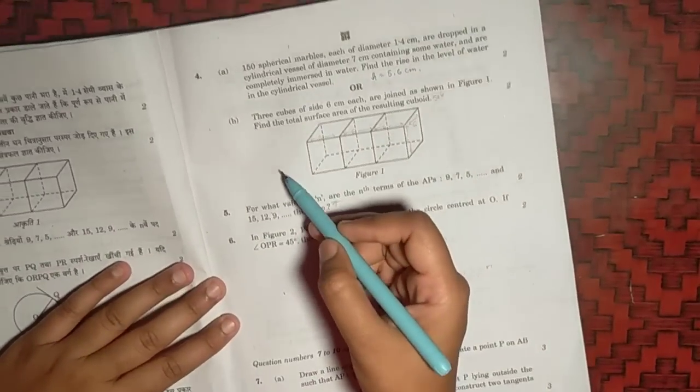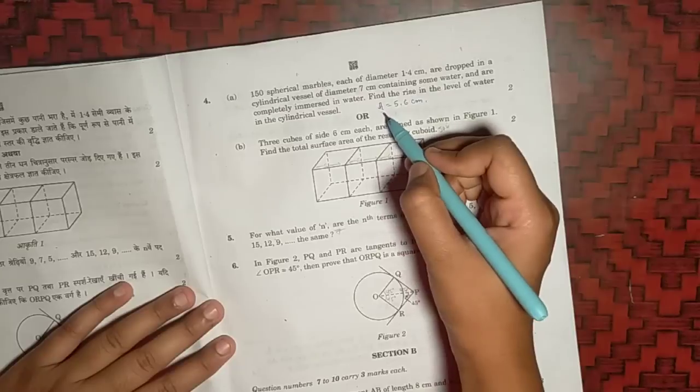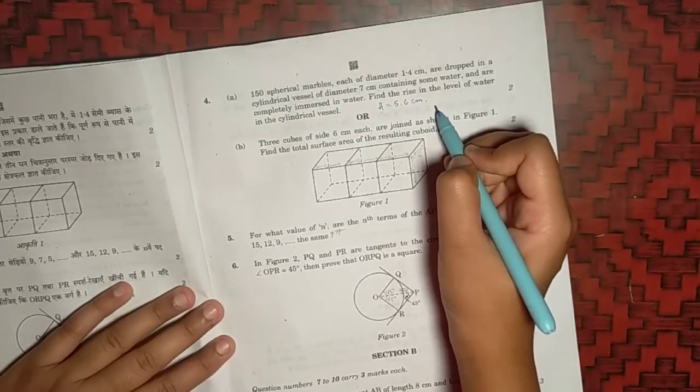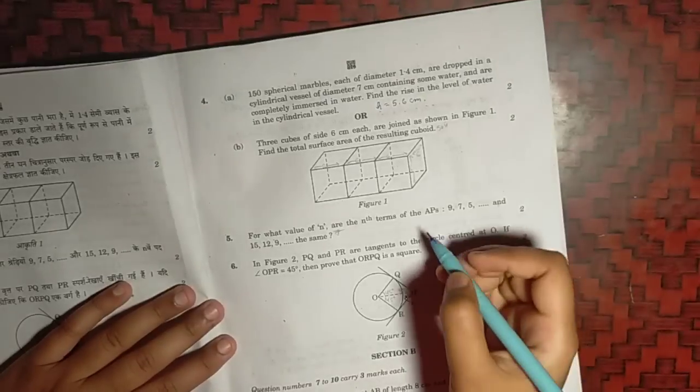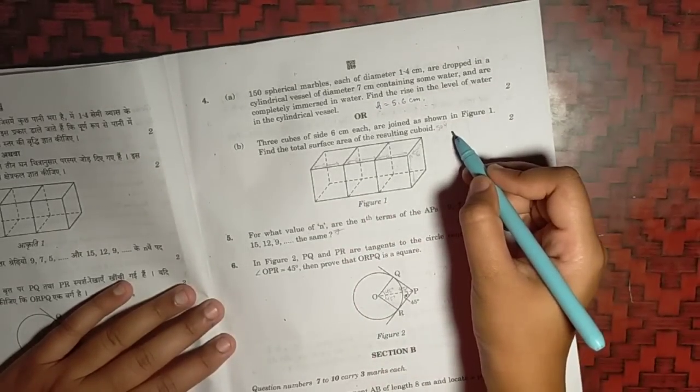Coming on to the fourth question, part A, which is the height of the vessel, the rise in the water level will be 5.6 cm. And then part B, the answer will be 504 cm squared.